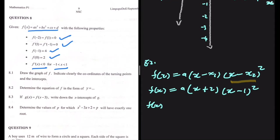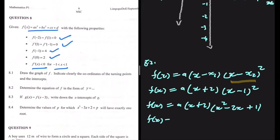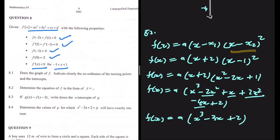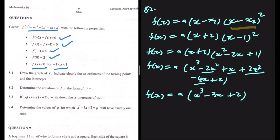Expanding: f(x) = a(x + 2)(x² - 2x + 1), which gives f(x) = a(x³ - 2x² + x + 2x² - 4x + 2). Simplifying, the -2x² and +2x² cancel to 0, and x - 4x = -3x, so f(x) = a(x³ - 3x + 2).